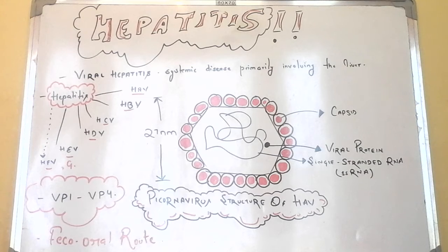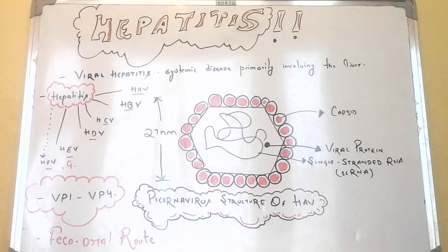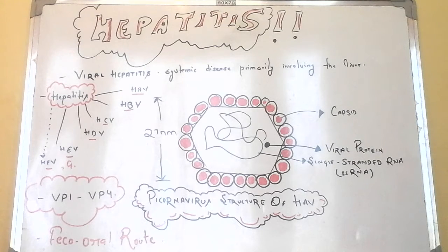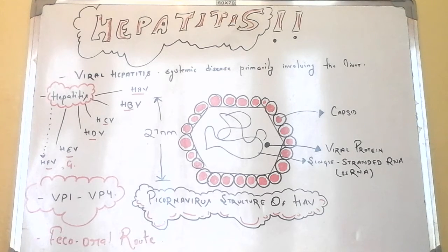The virus is shed in large quantities into the stool approximately 10 days before symptoms of jaundice appear or antibodies can be detected. HAV replicates slowly in the liver without producing apparent cytopathic effects. A brief viremia occurs during the pre-icteric phase but ceases with the onset of jaundice. Chronic viremia does not occur with this virus.